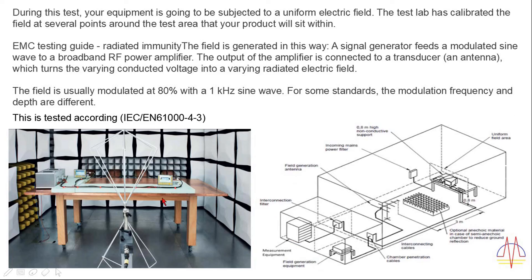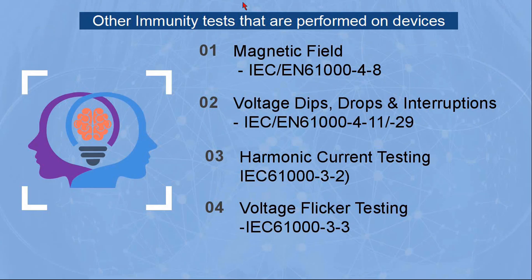Other immunity tests performed on the device include magnetic field testing, voltage dip, drops and interruptions, harmonic current testing, and voltage flicker testing. In future sessions I will explain in depth how to design a line filter that complies with EMC and EMI calculations, types of line filters used and their applications, and how to check EMC and EMI at the pre-compliance stage.